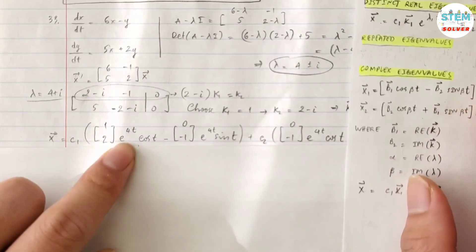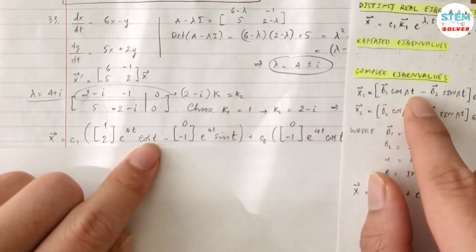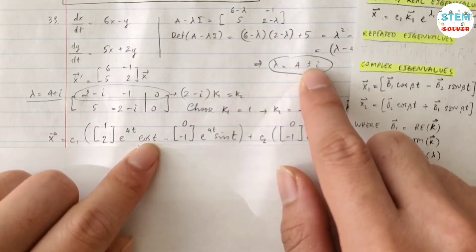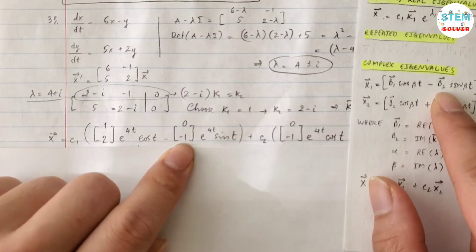e^(αt), α is the real part of λ, which is 4, e^(4t) times cos(t), so β is imaginary part of λ, so that you have 1 cos(1t), which is cos(t). Then minus vector b2,